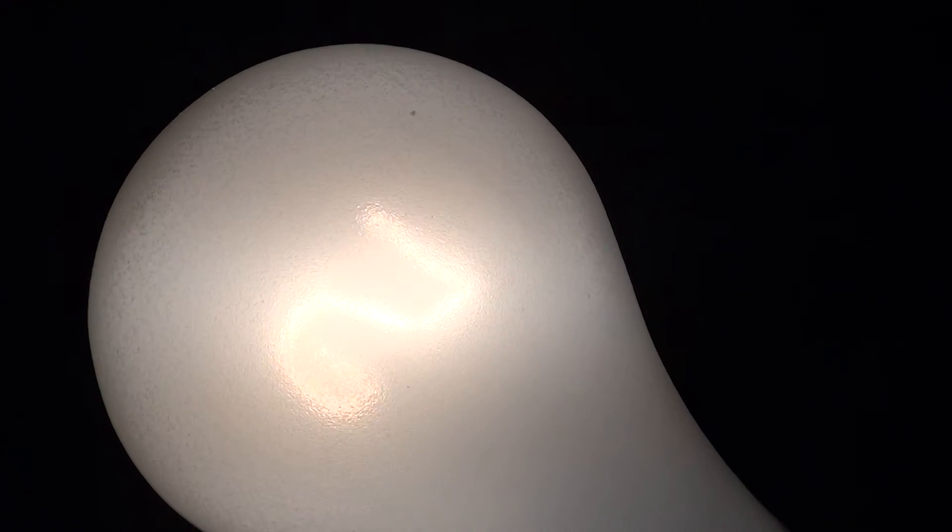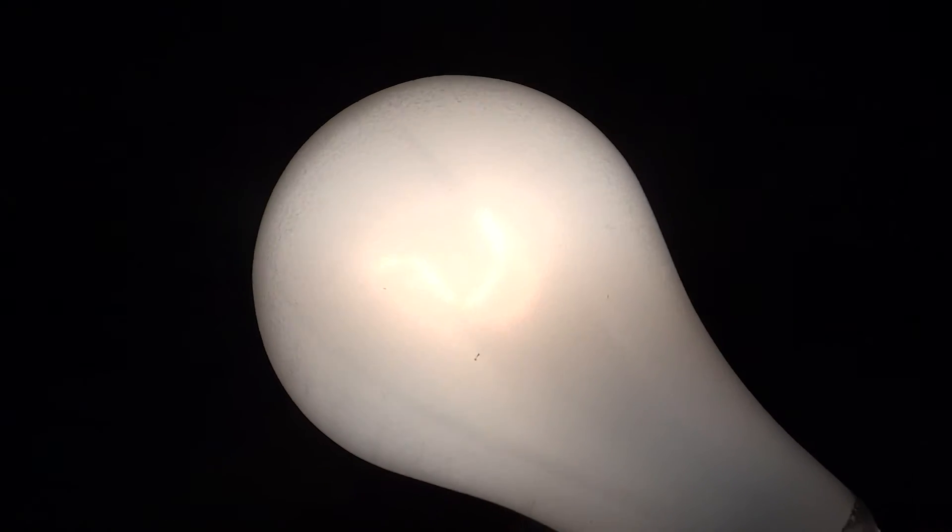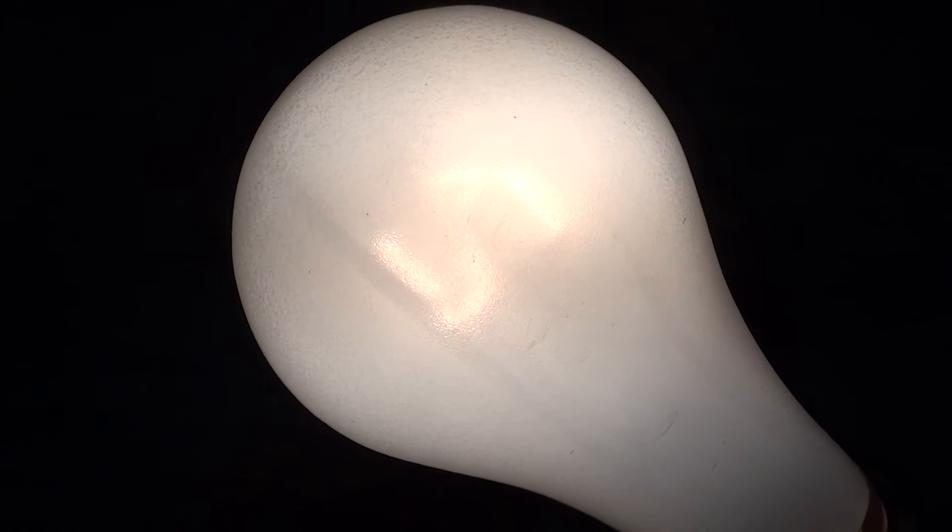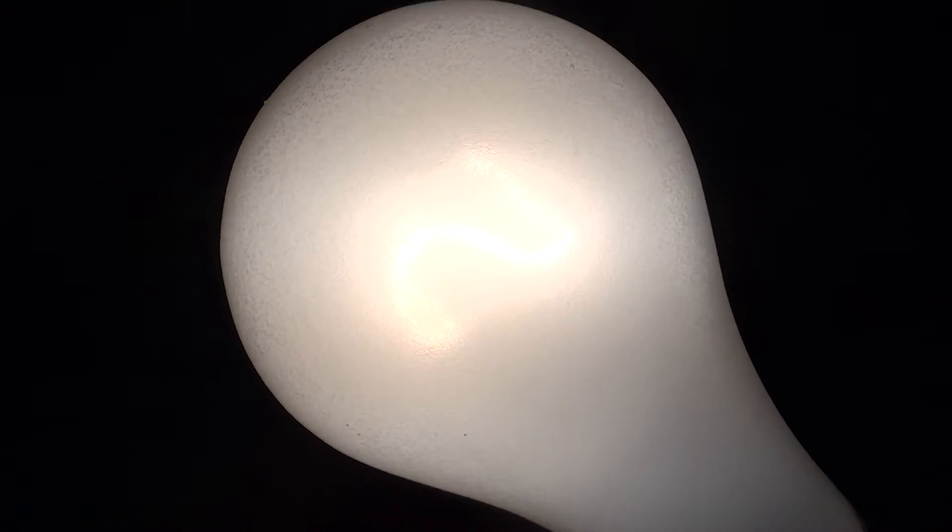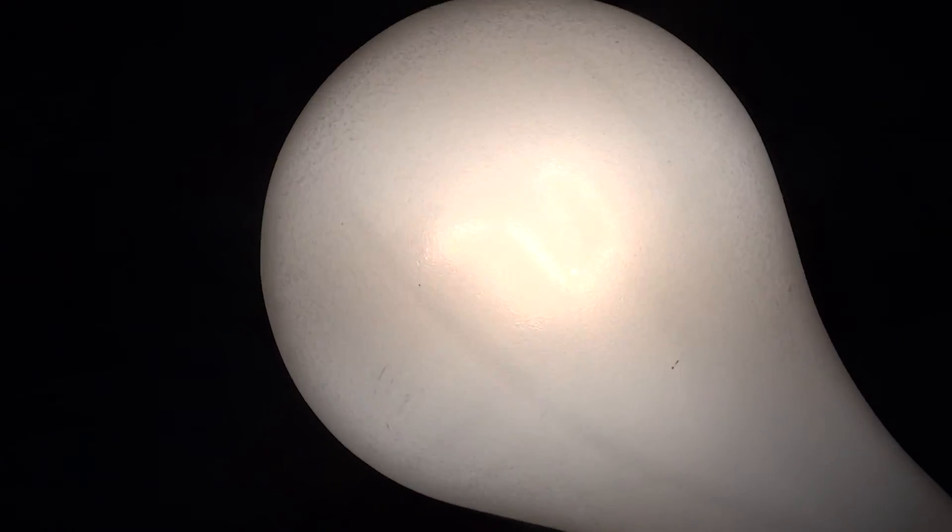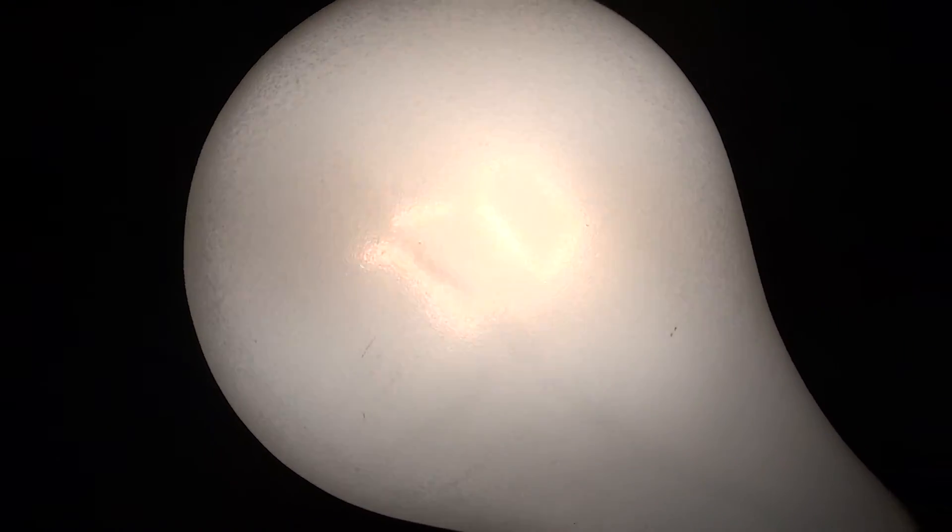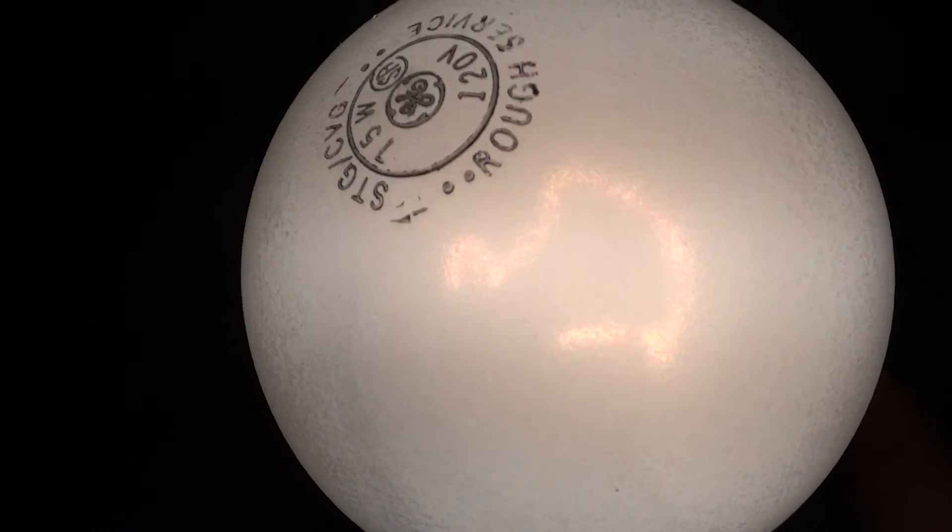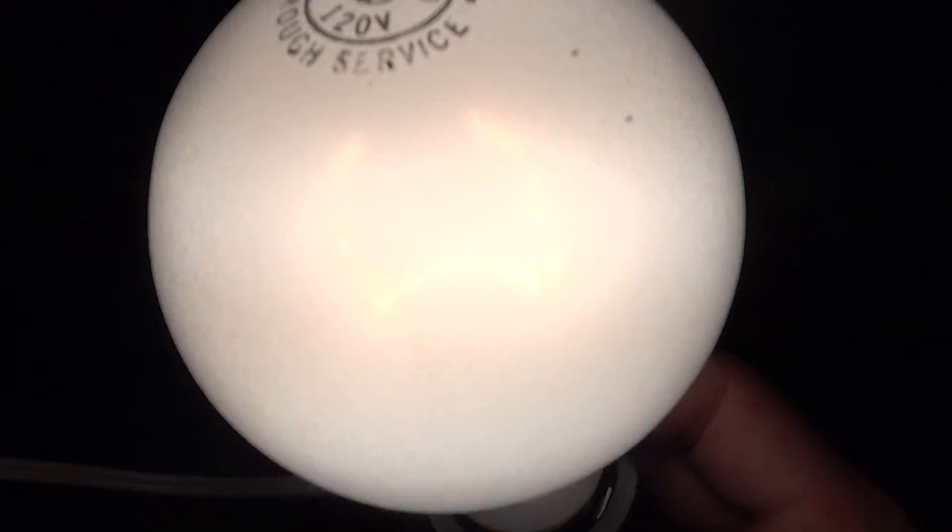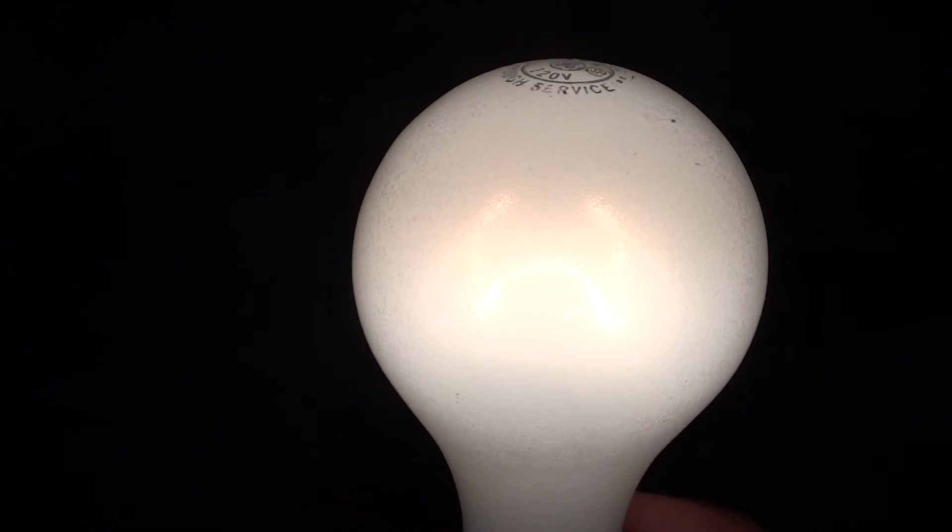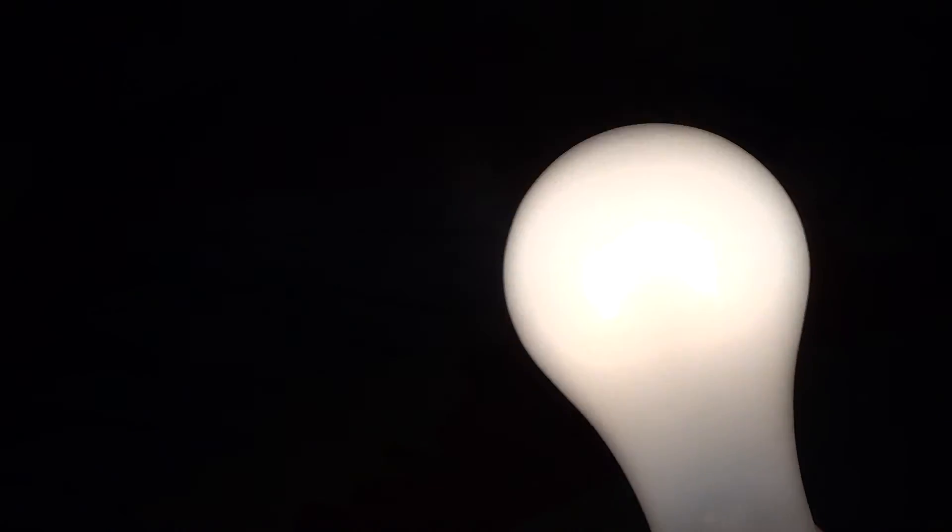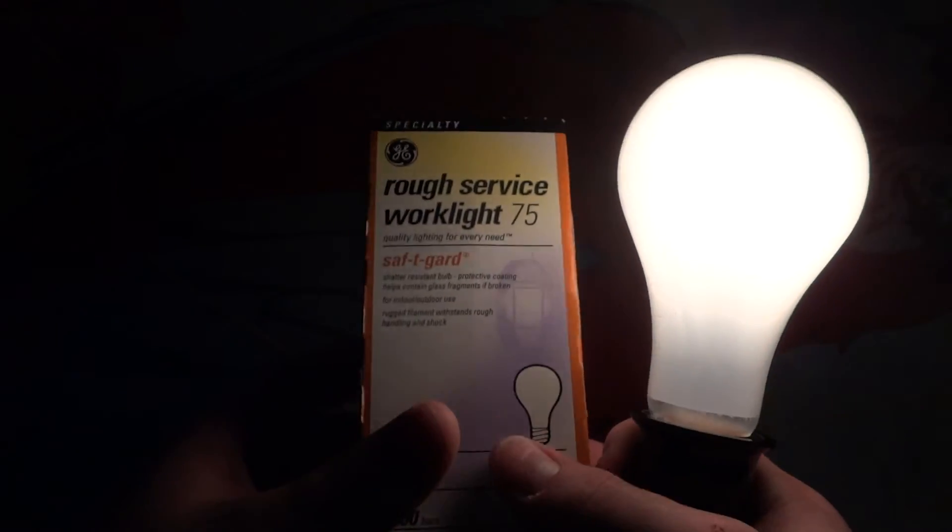Maybe that's why they have it in such a big bulb. Now that is a rough service filament if I've ever seen one - that's really wacky and interesting. I've never noticed that before about this bulb. I thought it was just straight up and down, but that's a really weird filament design. Anyway, there is my wacky GE rough service 75 watt weird filament bulb.